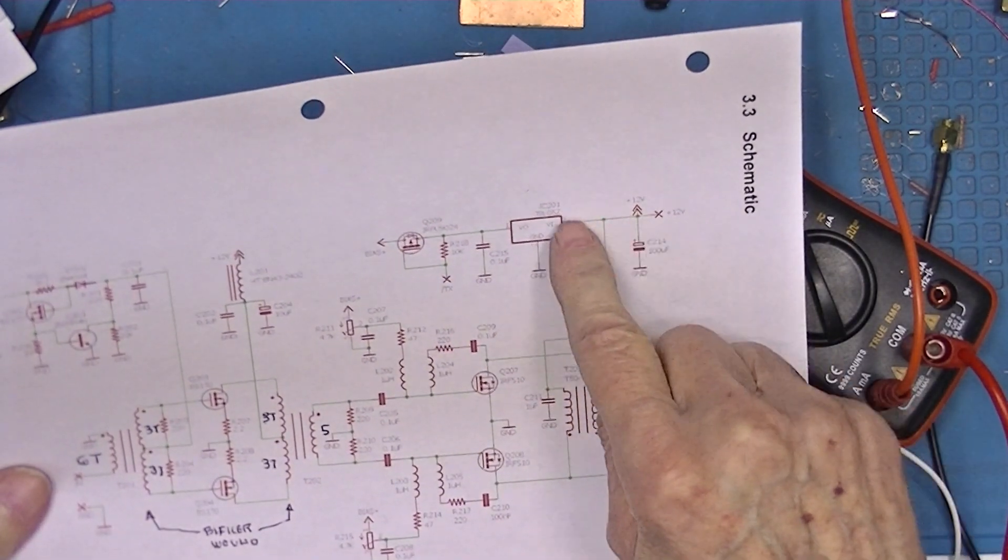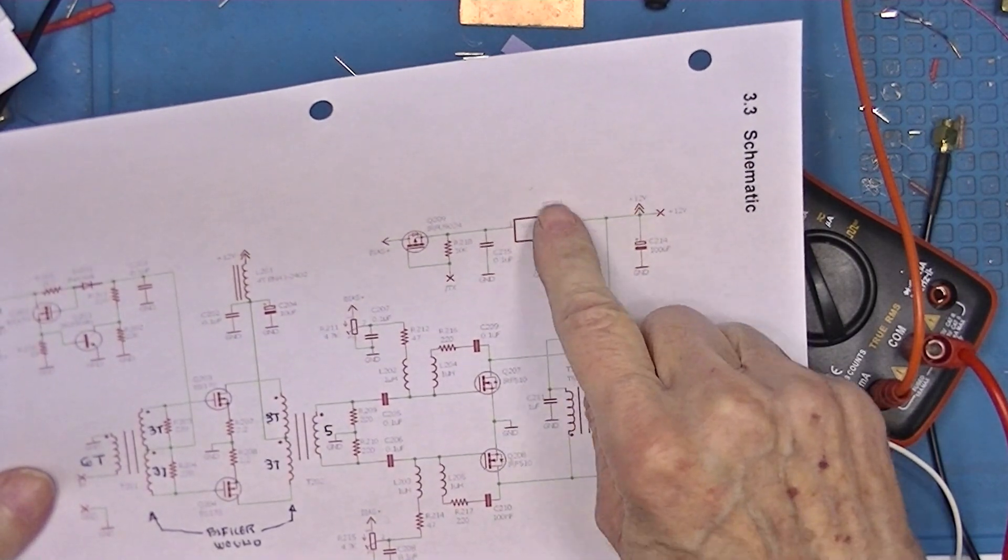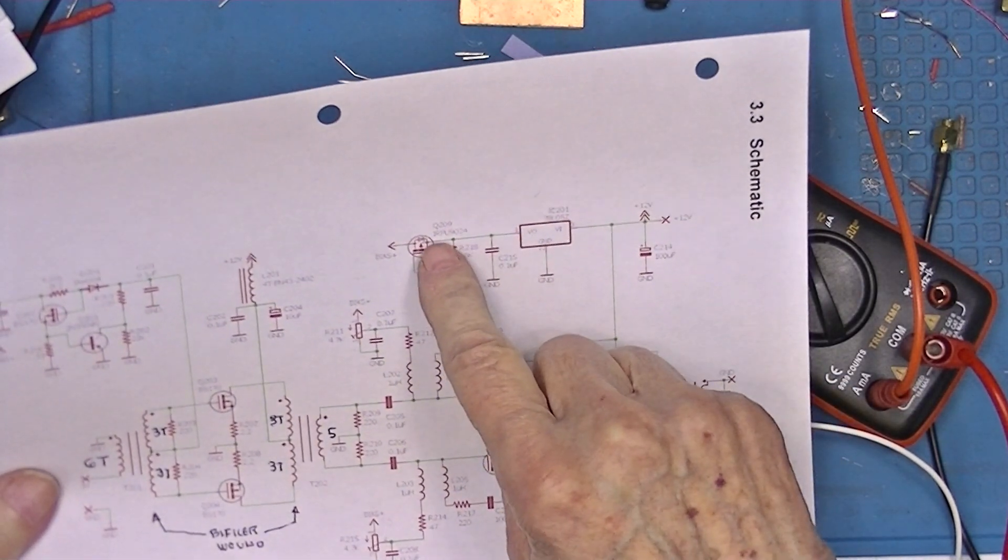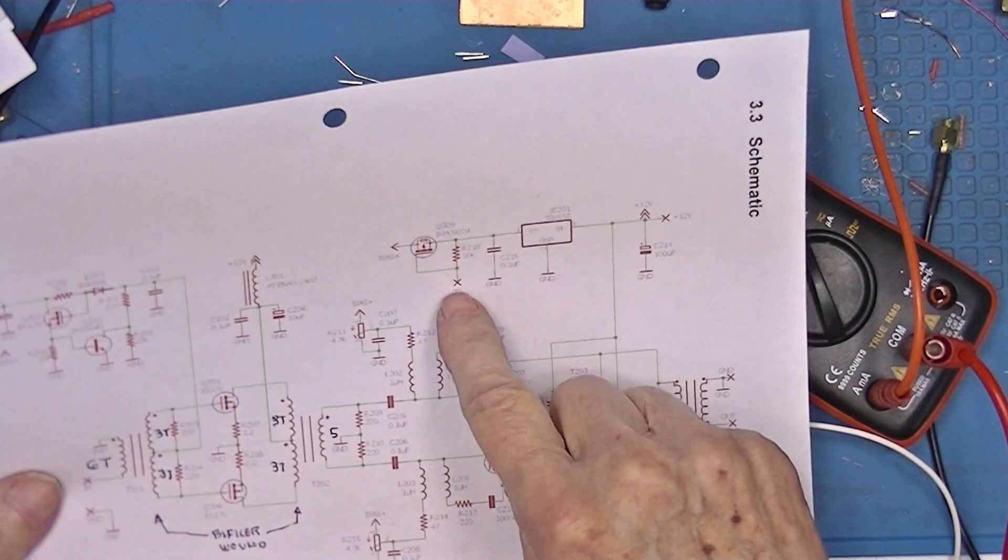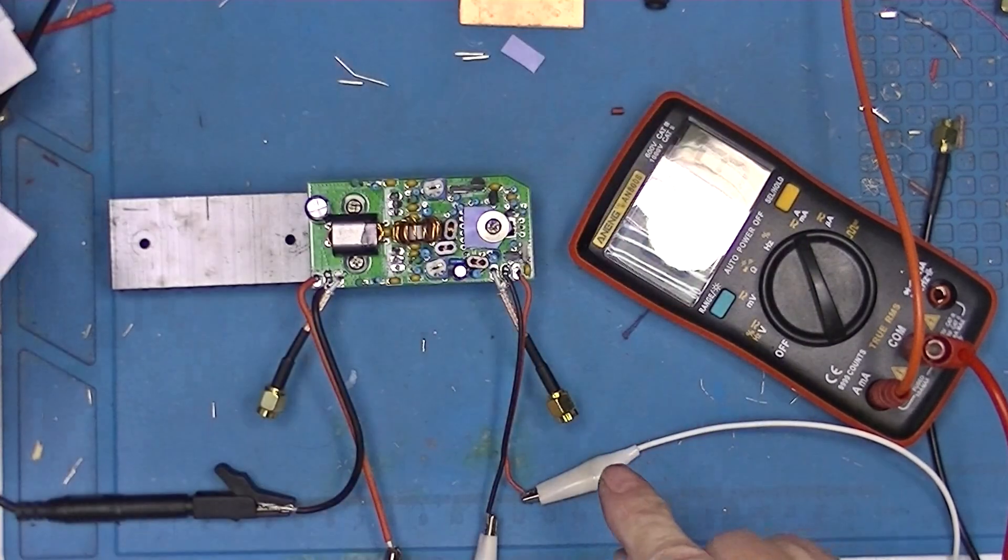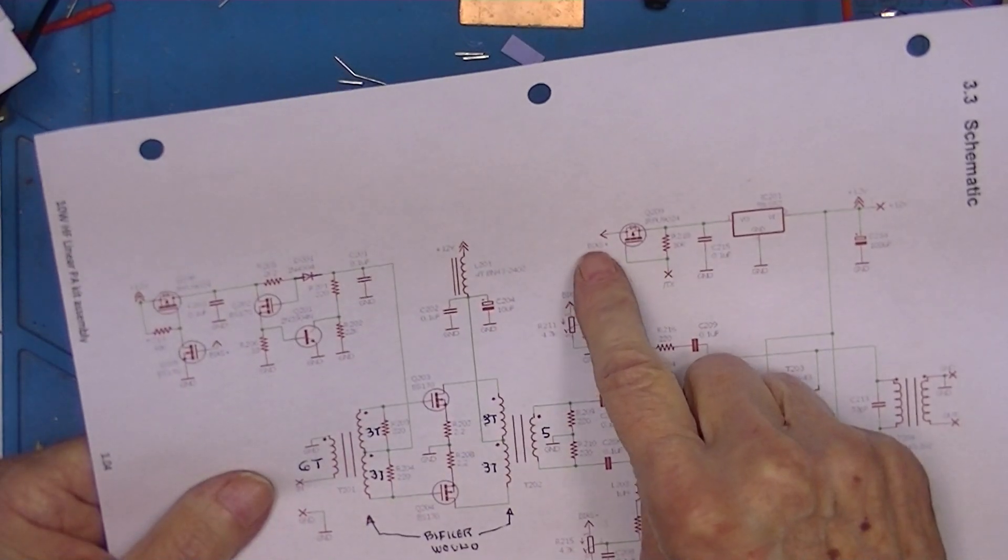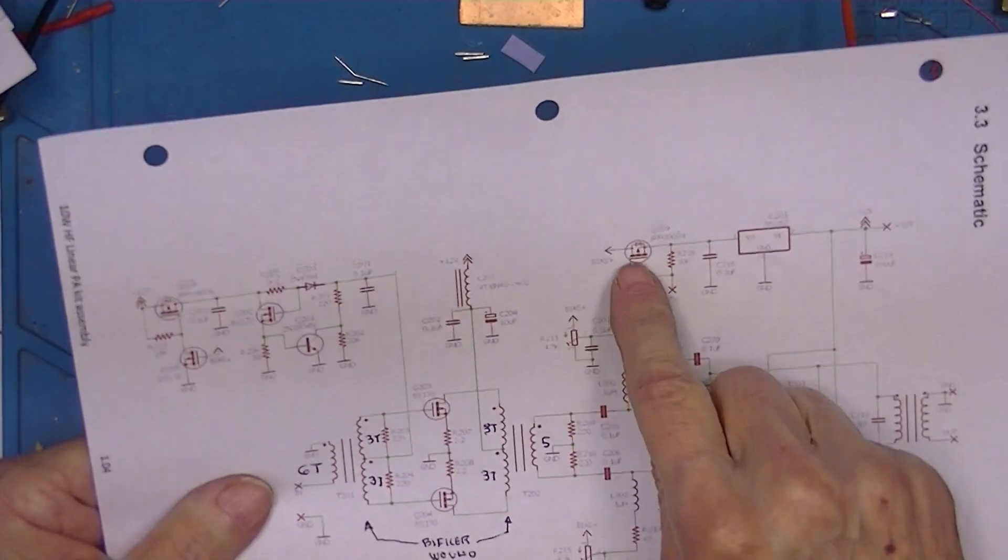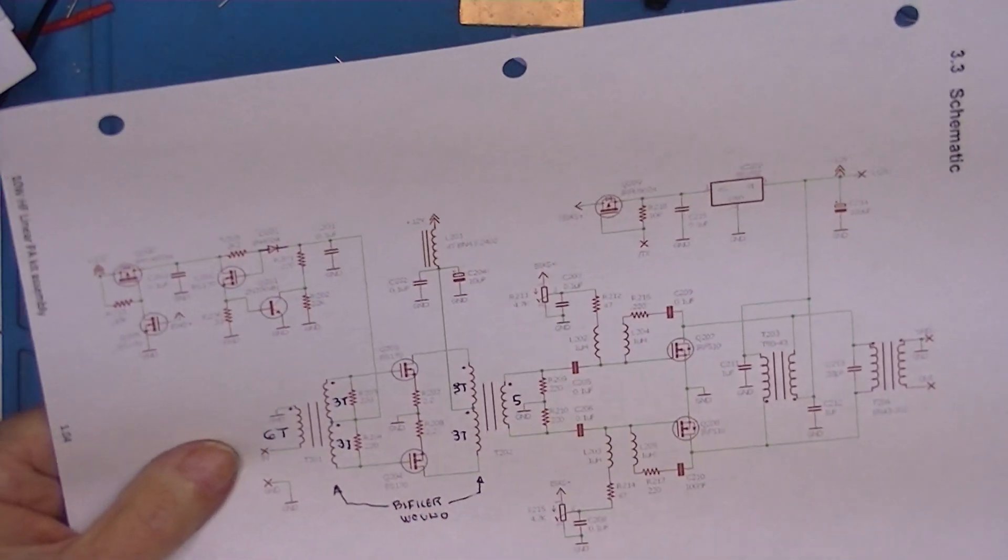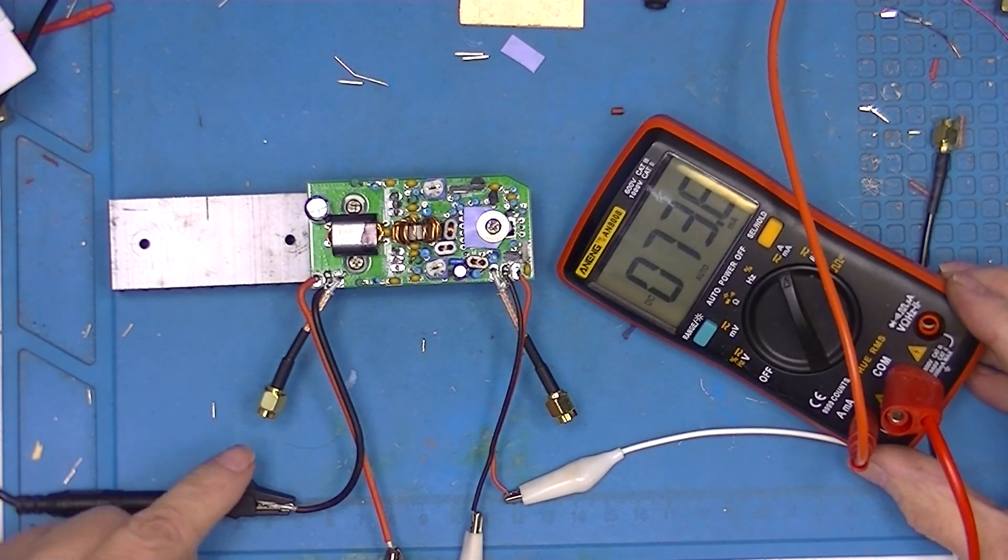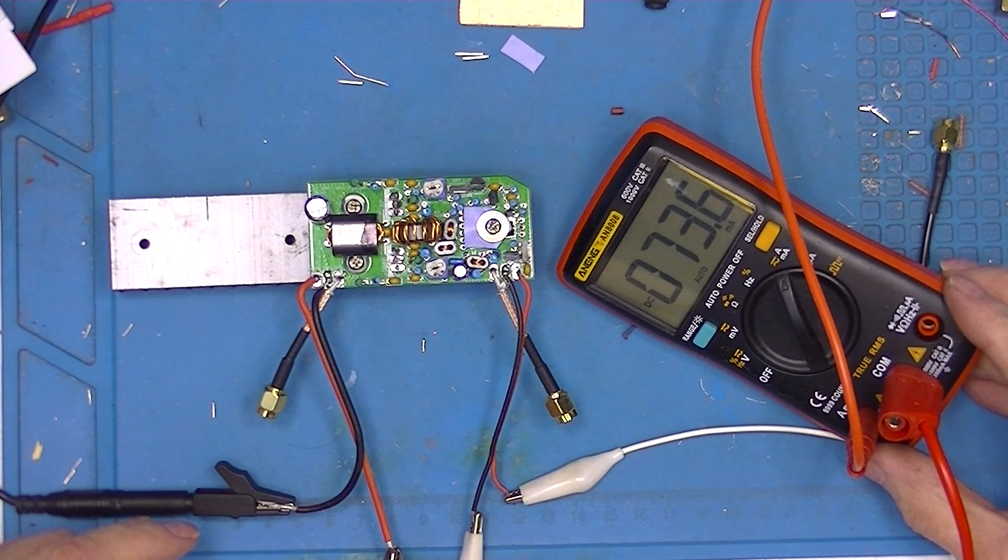What we're doing is turning on this MOSFET. The power comes in here, it's regulated at 5 volts with this three terminal regulator. And then, by taking this to ground, which is this red wire, I enable bias. By enabling the bias, I allow things to happen. So the no signal bias is 73.5 milliamps.